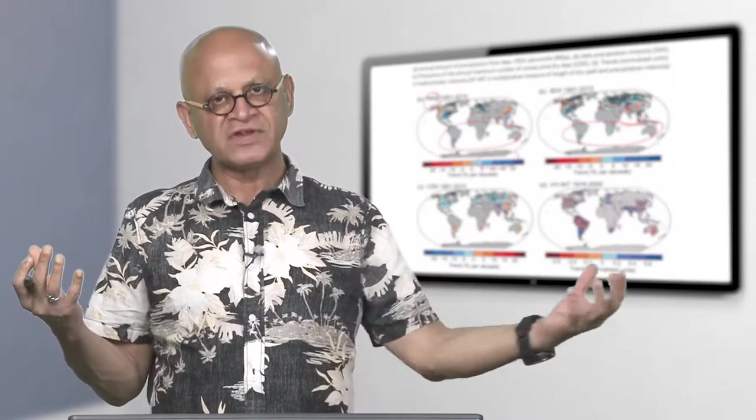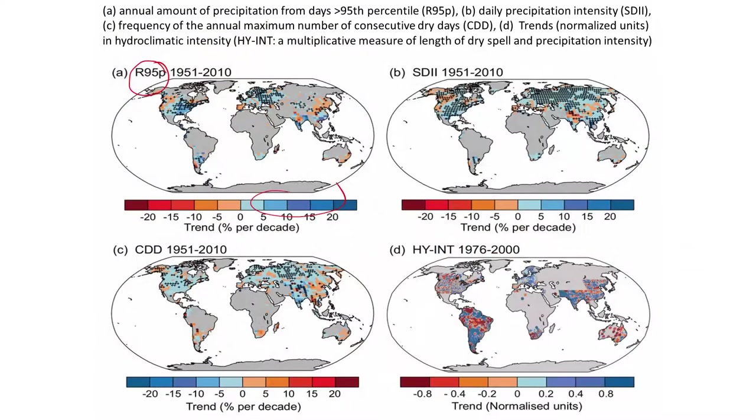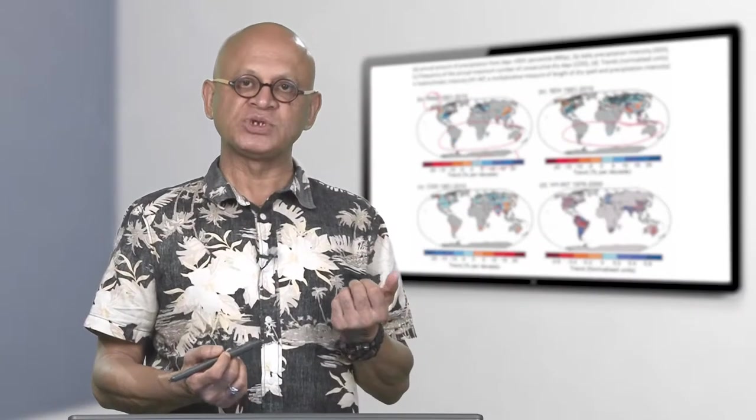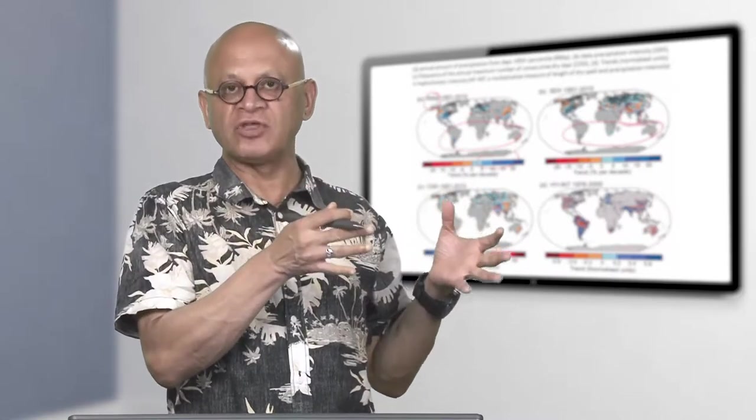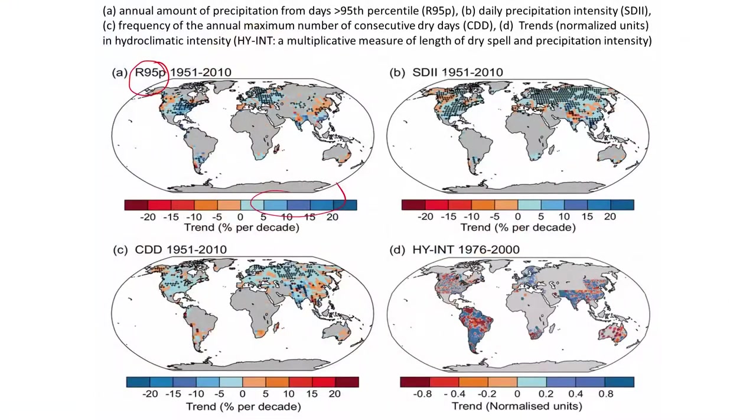If you rain more in one place often times you are taking the moisture from somewhere else. It automatically turns out that if you rain more in the north east for example, you will be taking the moisture from the rainfall that should fall on the Gangetic plain and vice versa. This is the second way of looking at it where you are looking at daily precipitation intensity which is also changing.